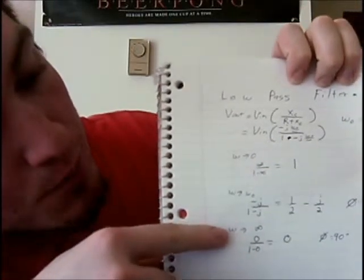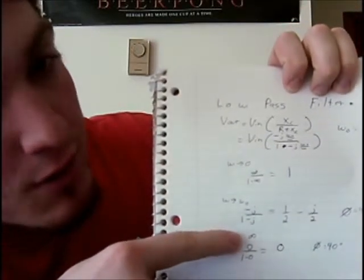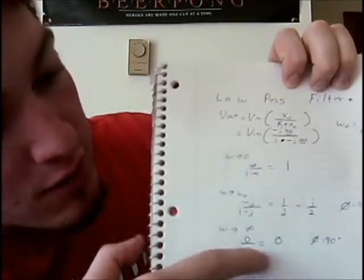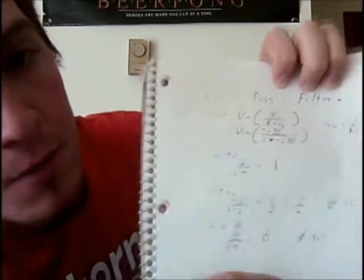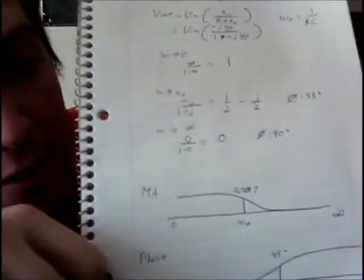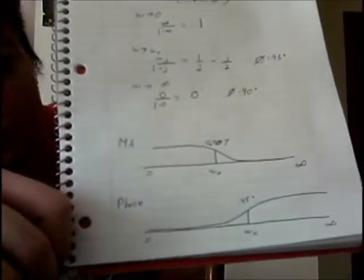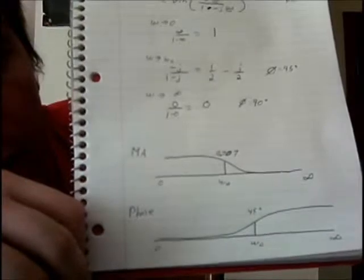And then next we took omega as it approaches infinity and this calculated out into zero and then our phase was 90 degrees. So for our graphs at the bottom they're pretty much the opposite of our high pass filter.